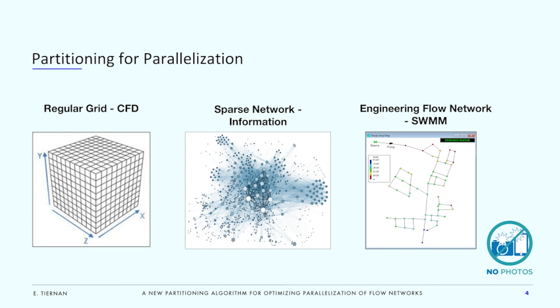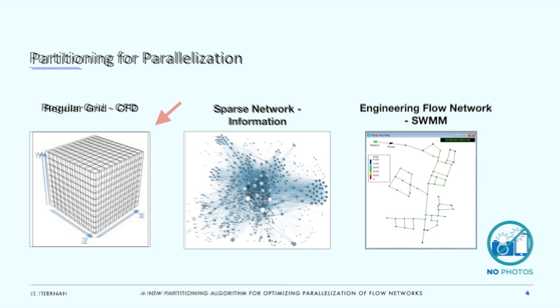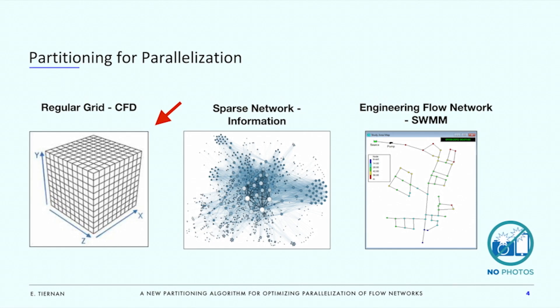Parallelization of engineering software came first to the domain of computational fluid dynamics, as you can see on the left here. In a gridded system like this, parallelization and partitioning just means dividing up your problem among processors, so each processor is essentially solving a smaller problem. The tradeoff, however, is that there are now boundary zones where you have to send information back and forth between processors. Inter-processor communication is far more time costly than intra-processor communication. For CFD, there's not a ton of partitioning optimization you can do — each grid cell has a certain number of neighbors, as defined by a regular, predictable adjacency matrix.